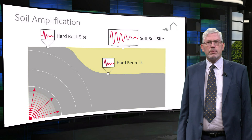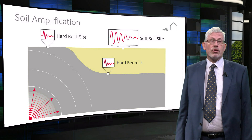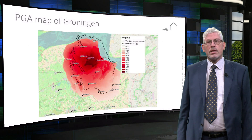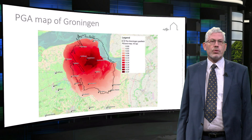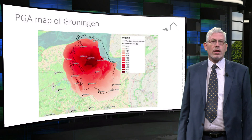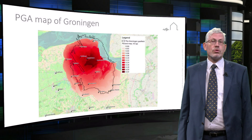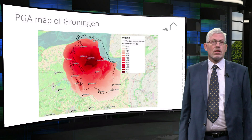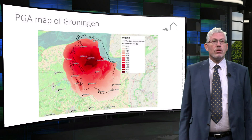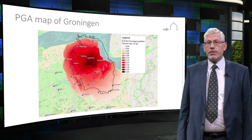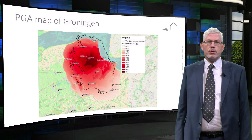A seismic hazard map has been derived for the Groningen region. This accounts for our understanding of the geological structure within the reservoir and the compaction rate. It also considers the soft soil deposits. This can be used directly in the assessment of existing buildings and the design of new buildings.